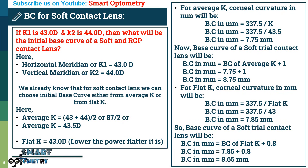Finally, if we take average K, then the initial base curve of this trial contact lens is 8.75 mm, and if we take flat K, the initial base curve of this trial contact lens is 8.65 mm.